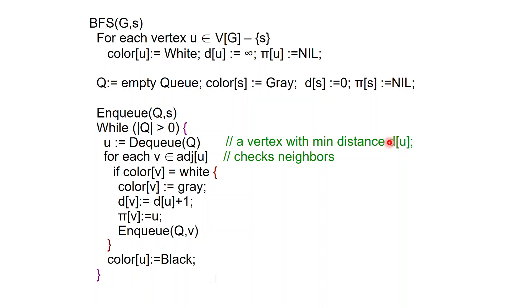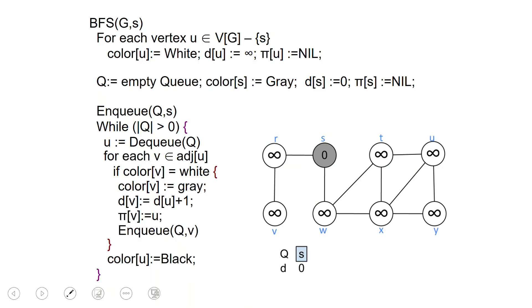Let us see how this works with an example. The nodes are labeled R, S, T, U, V, W, X, Y. Inside each node is its distance. After initialization, all distances are infinity except S which is zero. Below we have the queue — at the beginning we have just enqueued S. We also have our array D being constructed with the distances; everything is infinity except the distance of S which is zero. We will show the value of D for the vertices in the queue.